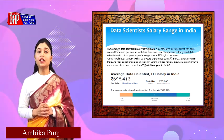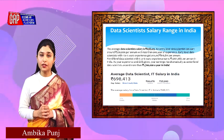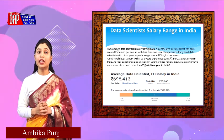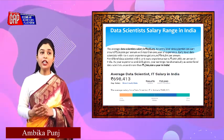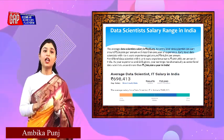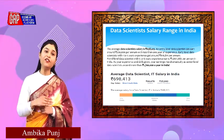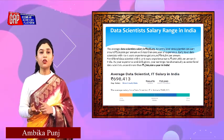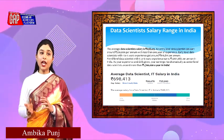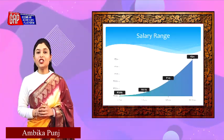Let us talk about the salary range of a data scientist or data analyst. The average data scientist salary is approximately 7 lakhs per annum. An entry-level data scientist can earn around 5 lakhs per annum with less than one year of experience. An early-level data scientist with 1 to 4 years of experience earns around 6 lakhs per annum. A mid-level data scientist with 5 to 9 years of experience earns approximately 10 lakhs. As your experience and skills grow, your earnings rise dramatically.